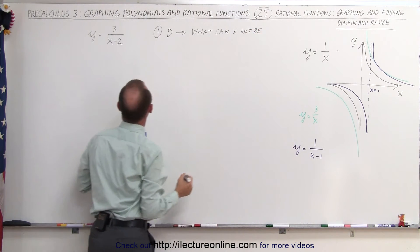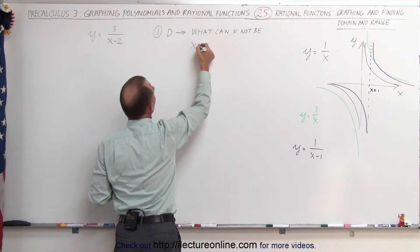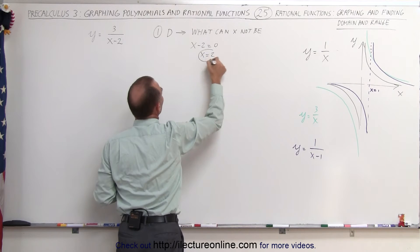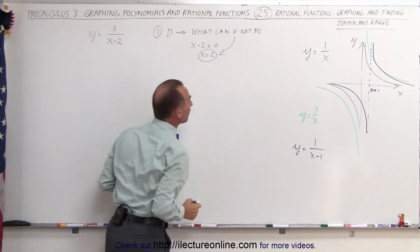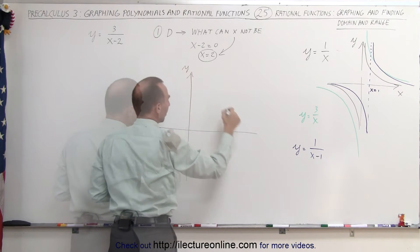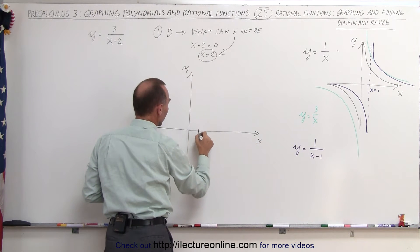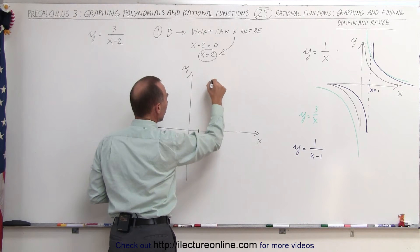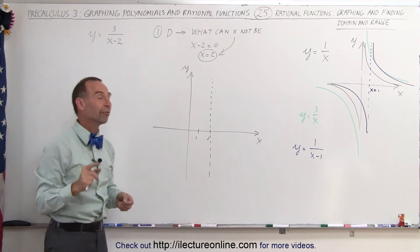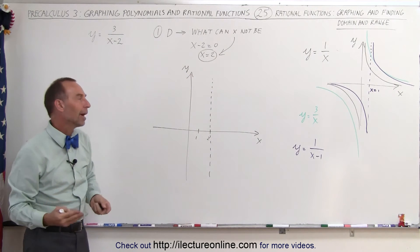In other words, what will make the denominator 0? In this particular case, when you set the denominator equal to 0, x minus 2 equals 0, that means x equals 2 is a value that x cannot be. So when you graph this function, you look for the line x equals 2 and draw a vertical asymptote there. That means this line can never be crossed, because when the function crosses that line, the denominator will be 0 and y will be undefined. The function needs to be on the left or the right side of that vertical asymptote.